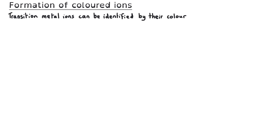One of the distinctive characteristics of transition metals is their formation of coloured ions, which means that transition metals can be identified by their colour.